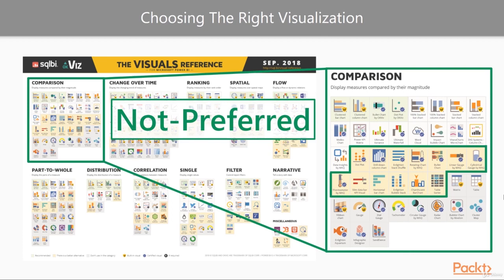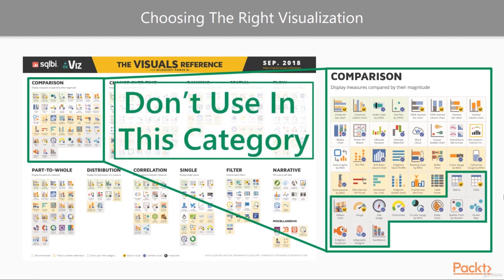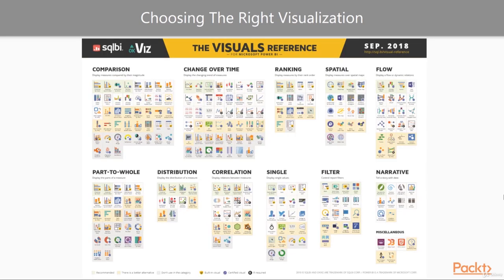Thirdly, this section is the not preferred visuals. While technically they can work with this type of data category, you will have better alternatives in the preferred or top pick category, so it's best to pick something else if you can. Lastly, this bottom section is reserved for the remaining visuals that are not recommended — avoid these as they might misinform users or tell the wrong story. I'll leave you to explore this in more depth once you've downloaded the file, but overall, knowing your visual cues and pairing your research with a tool such as the Visuals Reference will give you a great start in choosing a quality visualization to accurately represent both your data and the story you want to tell.